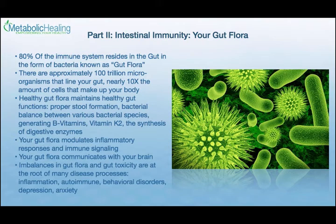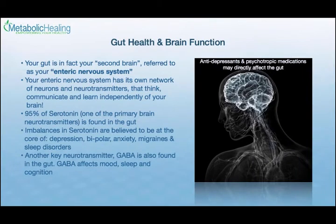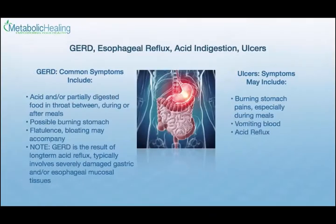Your gut is, in fact, your second brain, referred to as your enteric nervous system. Your enteric nervous system has its own network of neurons and neurotransmitters that think, communicate, and learn independently of your brain. You have this mucosal barrier that contains your immune defenses, your immunoglobulins, and the proliferation of the various bacterial species that make up the mucosal immunity.